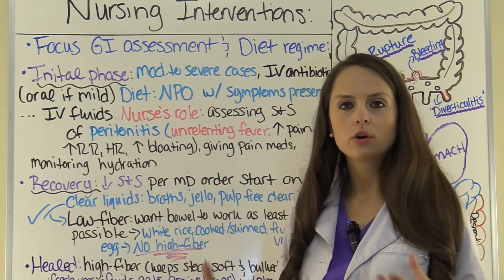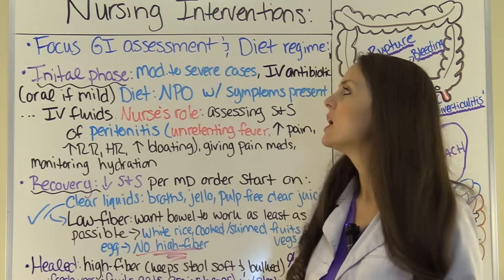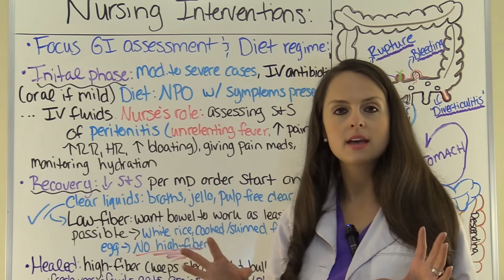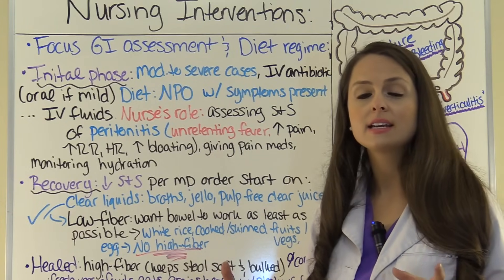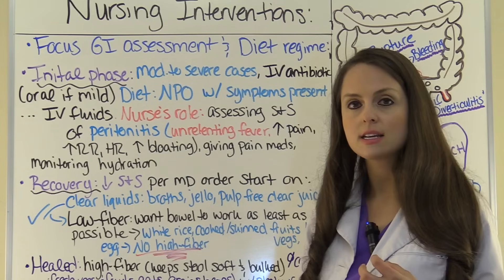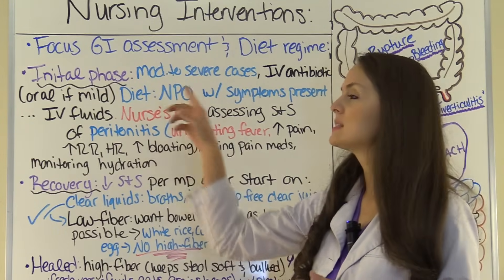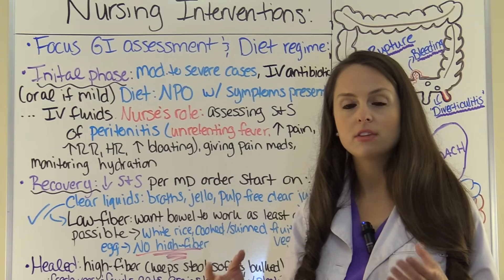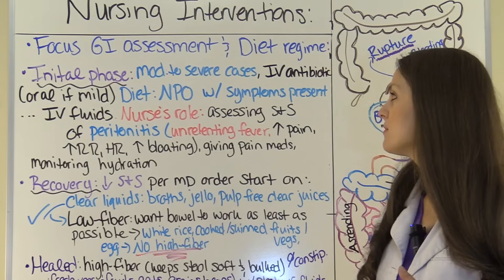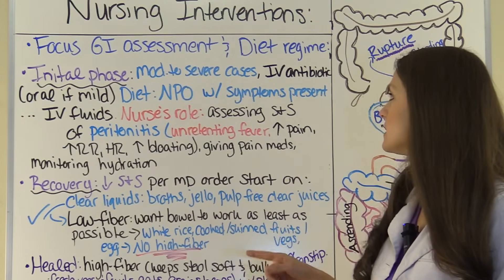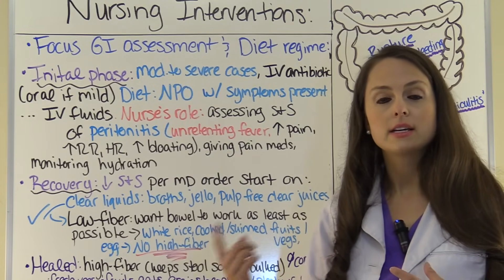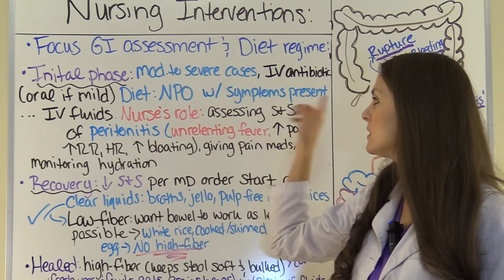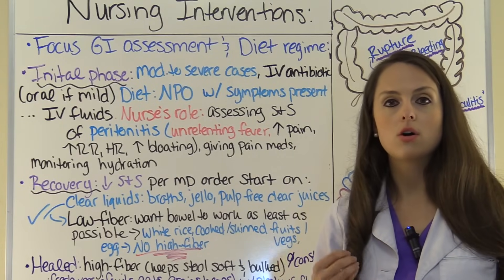Now let's look at nursing interventions for a patient with diverticulitis. As a nurse, you really want to focus on GI assessment and the diet regimen — that's the big thing test questions like to ask about. During the initial phase, when the patient has symptoms and that herniated sac is inflamed and they're very sick, for moderate to severe cases they'll usually be hospitalized. The doctor will prescribe IV antibiotics — mild cases will be oral — so you'll be administering those. Diet during this time will be nothing by mouth while those symptoms are presenting, and instead they'll have IV fluids.